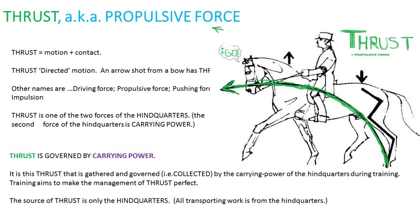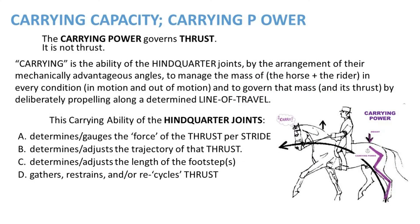Thrust, also known as propulsive force, is one of the two forces of the hindquarters. Thrust equals motion plus contact. Thrust is directed motion — an arrow shot from a bow has thrust. Other names are driving force, propulsive force, pushing force, impulsion. Thrust is governed by carrying power. It is this thrust that is gathered and governed — i.e., collected — by the carrying power of the hindquarters during training. Training aims to make the management of the thrust perfect. The source of thrust is only the hindquarters; all transporting work is from the hindquarters.